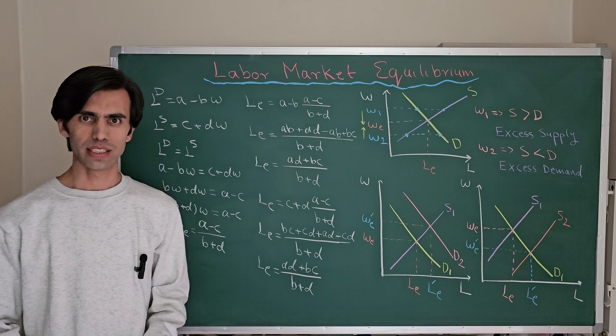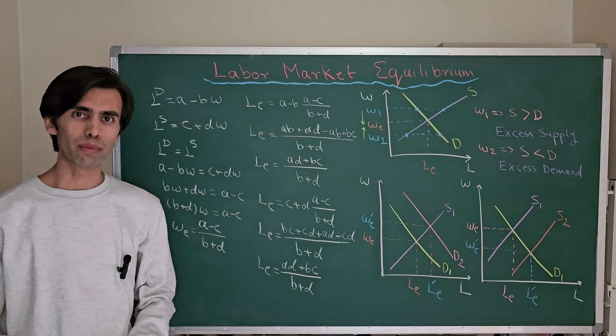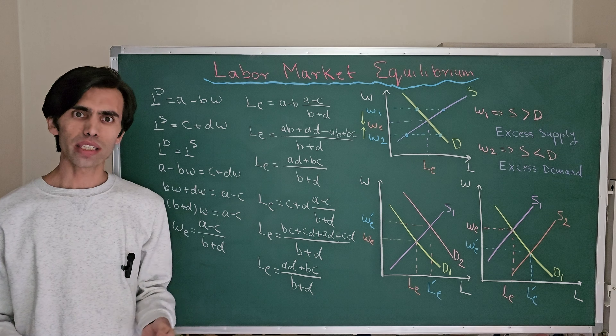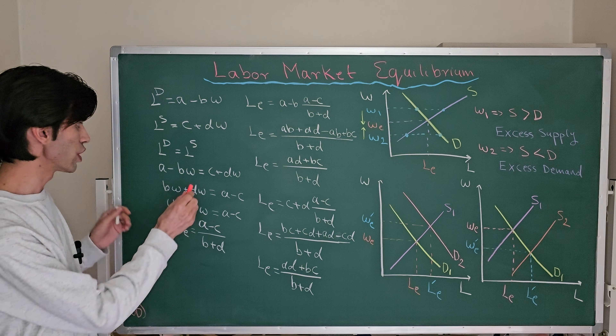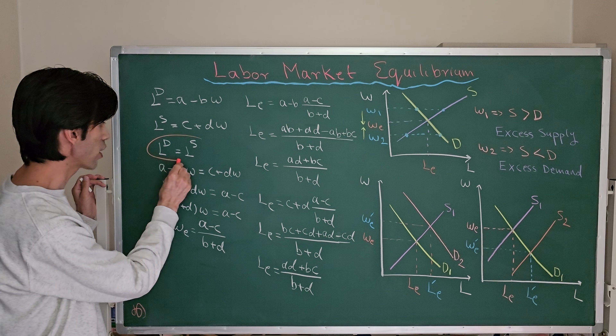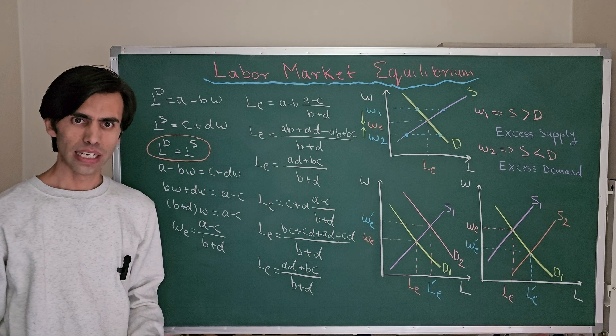Welcome to another video on labor economics. In this video, we will learn about labor market equilibrium — what it is and how we can show it. Labor market equilibrium is the state at which labor supply equals labor demand, meaning the quantity of labor supplied in the market is equal to the quantity of labor demanded by the firms in the labor market.